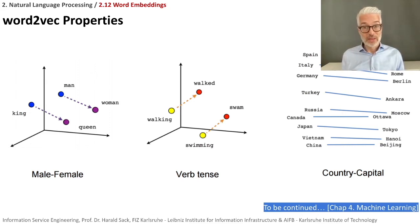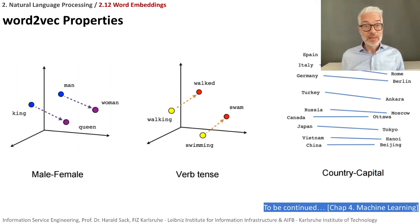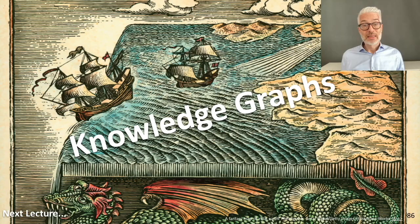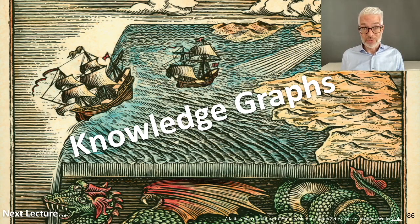So much for word embeddings within NLP. We are at the end of our NLP session, though this topic will continue later in chapter four on machine learning. In the next lecture, we start a completely new section and will be talking about knowledge graphs.